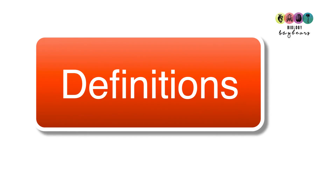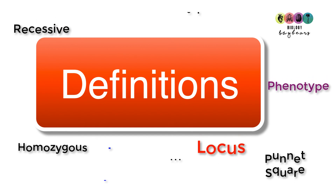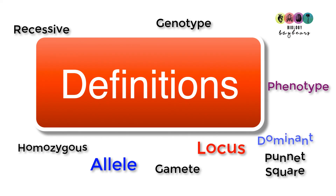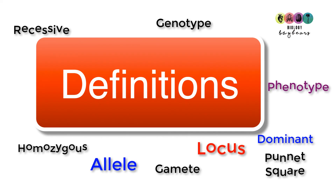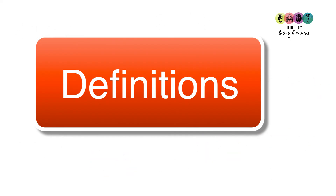That was an introduction to genetic crosses, looking at simple crosses for one trait — monohybrid crosses. You must know that definitions are essential: if you don't know the terms you won't understand what the questions are asking. Learn the definitions, as they're worth handy points, and practise other questions.